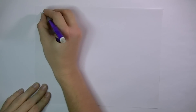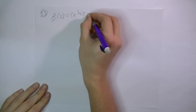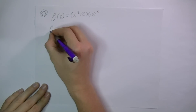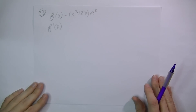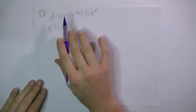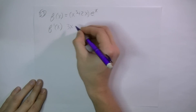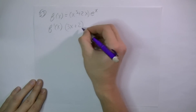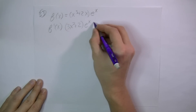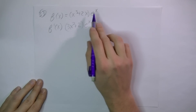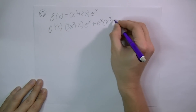Number 33. f of x equals x cubed plus 2x times e to the x. Find f prime of x. Don't make the same mistake of trying to take the integral because we're looking for the derivative. So this will be the product rule. The derivative of the first is 3x squared plus 2, and we keep the second function the same.